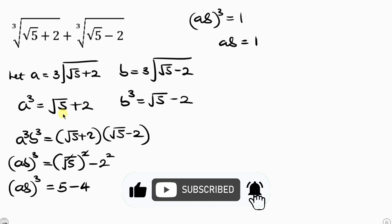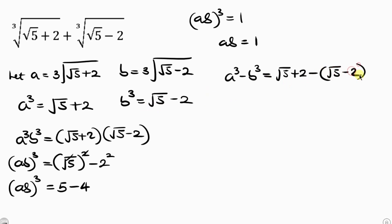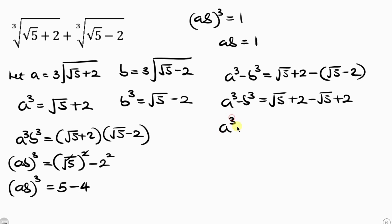Our next step is to subtract A cubed minus B cubed. A cubed is the square root of 5 plus 2, and B cubed is the square root of 5 minus 2. Using the negative to open up the brackets, I get the square root of 5 plus 2 minus the square root of 5 plus 2. The square root of 5 terms cancel, so A cubed minus B cubed equals 4.